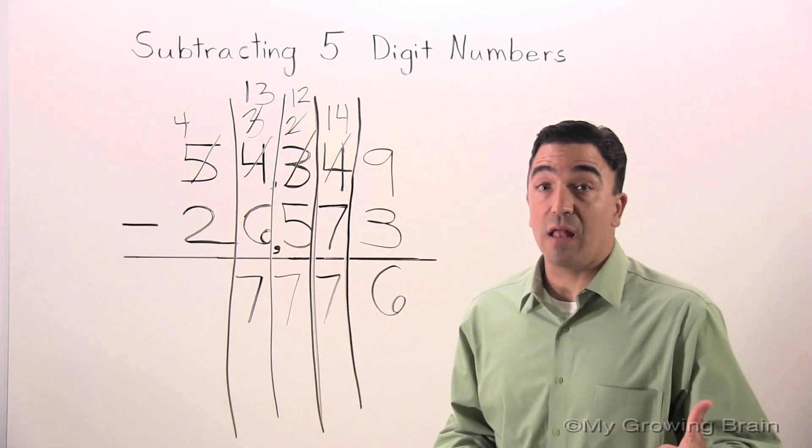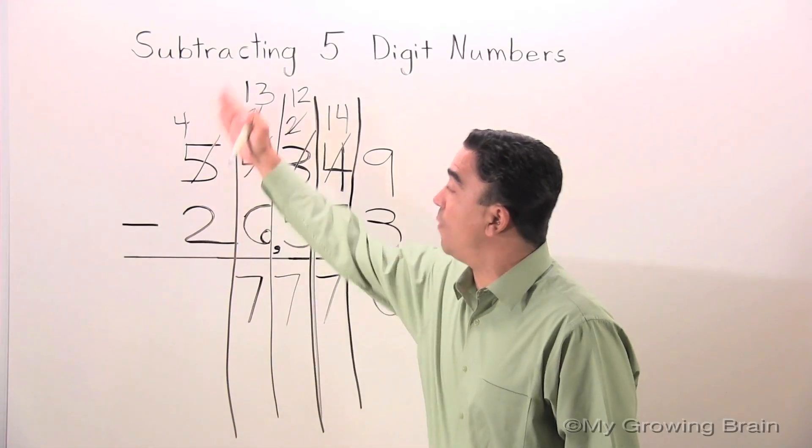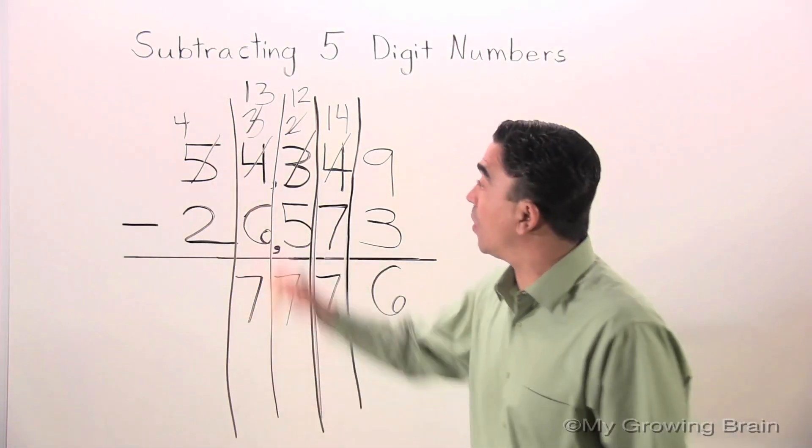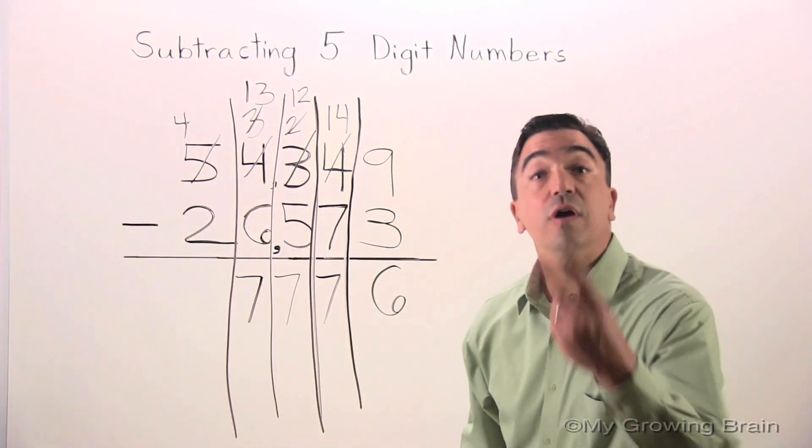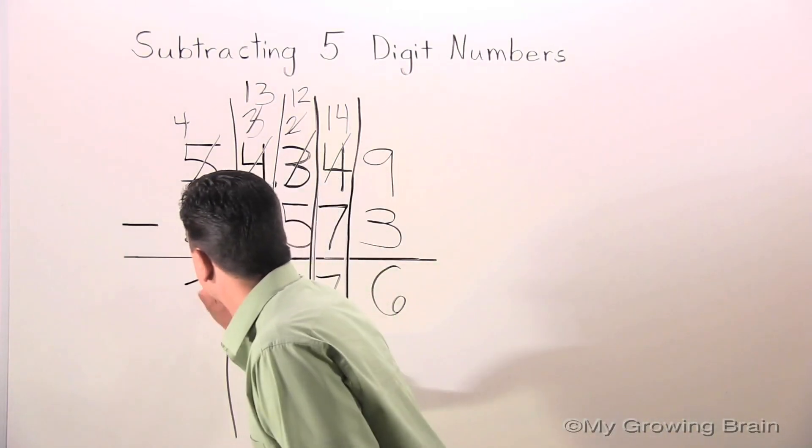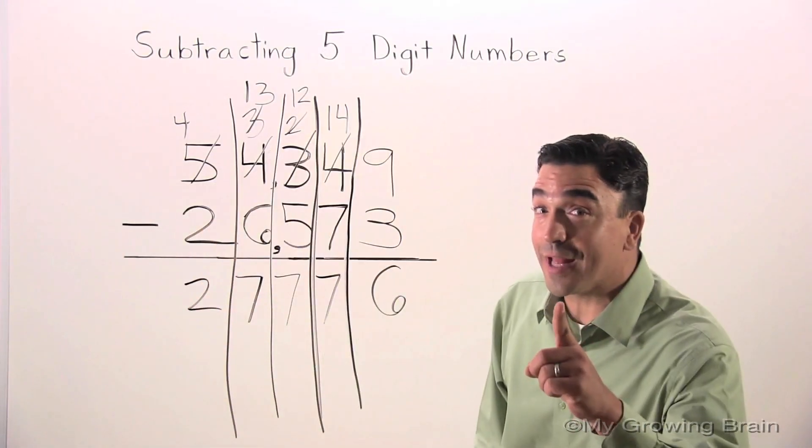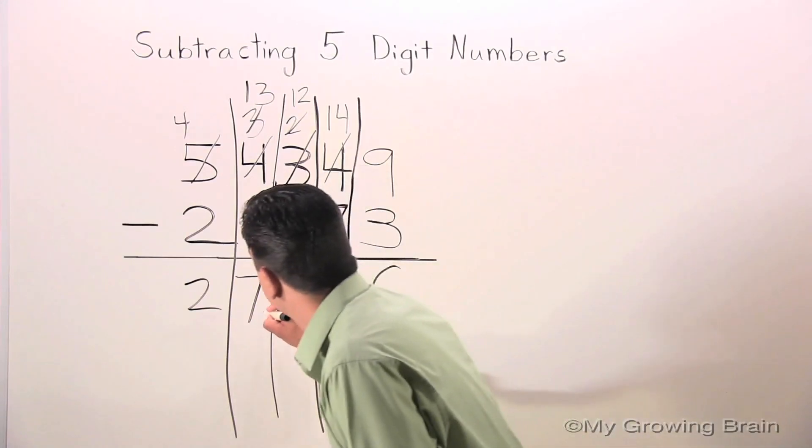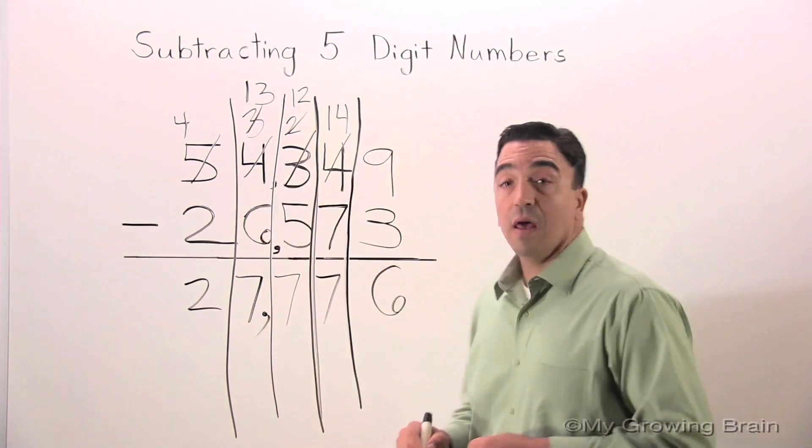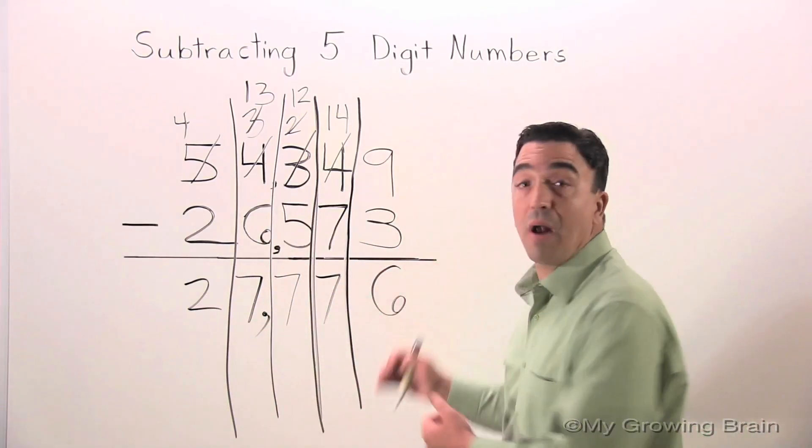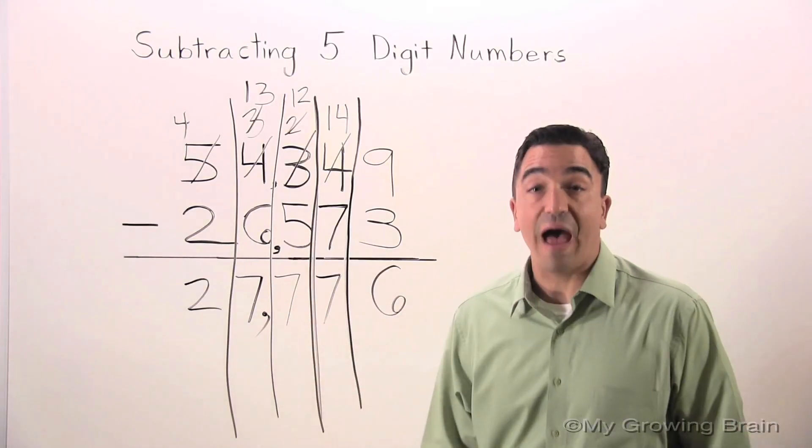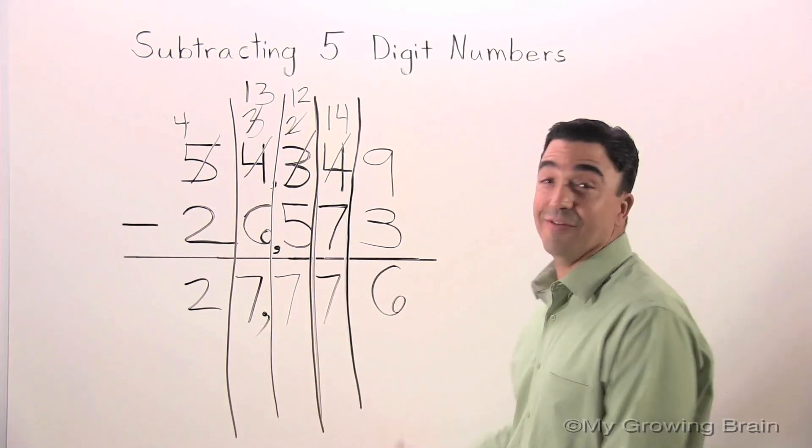Last but not least, we need to subtract two from four in the ten thousands place, or four minus two, which is two. Don't forget the comma. The difference of our problem is 27,776.